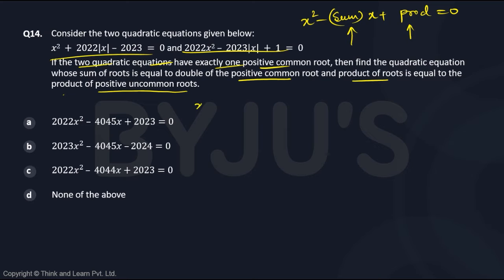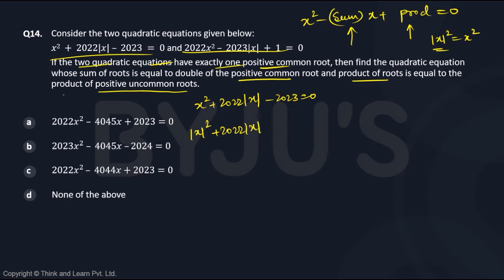Starting with the first quadratic equation: x² + 2022|x| − 2023 = 0. One way to deal with a quadratic equation containing x² and |x| is to use the idea that |x|² is the same as x². So you can replace x² with |x|². This becomes |x|² + 2022|x| − 2023 = 0, which factorizes as (|x|² + 2023|x|) − (|x| + 2023) = 0.